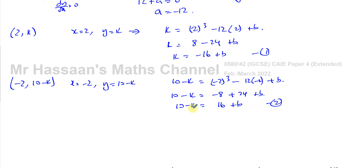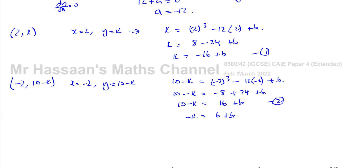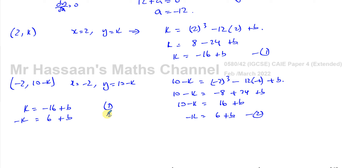Now I have a pair of simultaneous equations: k equals negative 16 plus b, and negative k equals 6 plus b. Adding these two equations together gives 0 equals negative 10 plus 2b, so 10 equals 2b, and therefore b is equal to 5.